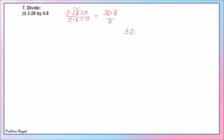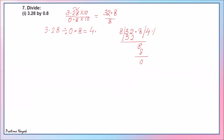So 32.8 divided by 8: 8 goes into 32 four times, remainder 0. Now the decimal part — bring down 8, 8 into 8 is 1. So the answer is 4.1. Therefore, 3.28 divided by 0.8 equals 4.1.